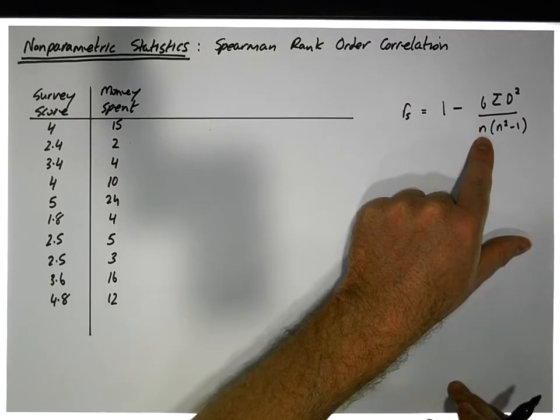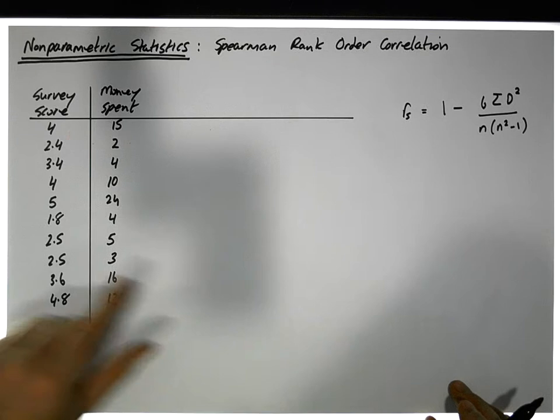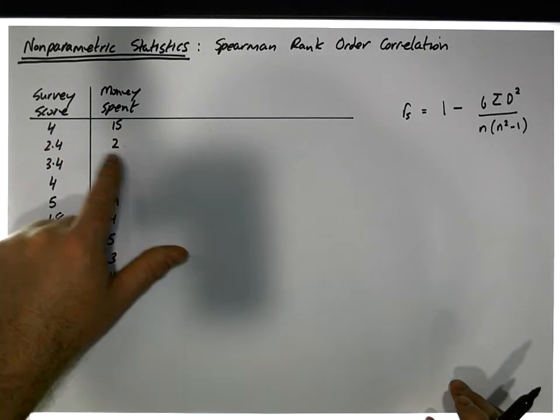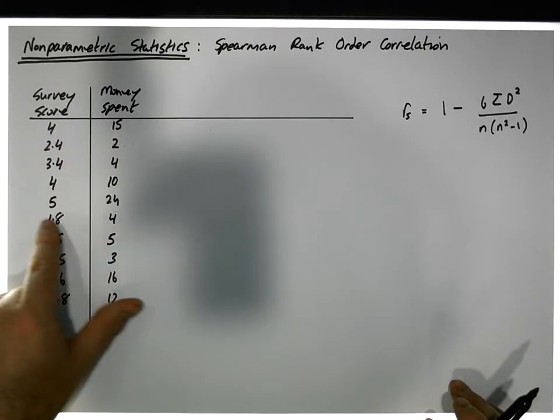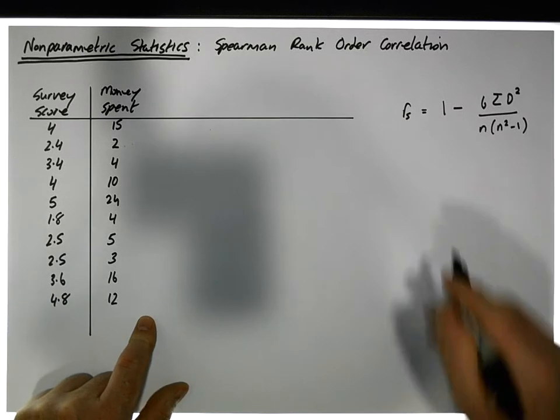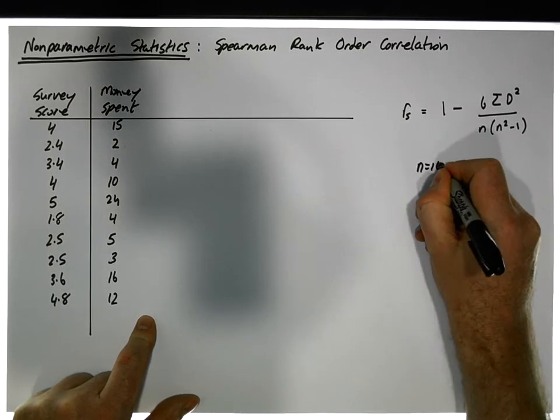So to calculate this correlation coefficient, we need to know n, how many paired observations there are. In this case there's 1, 2, 3, 4, 5, 6, 7, 8, 9, 10. So in this case n is equal to 10.